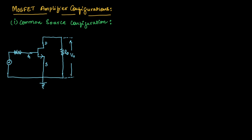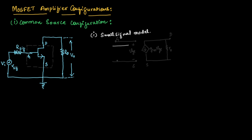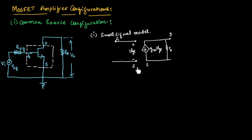We will be measuring the output voltage V0 at the drain terminal, and at the gate terminal we will measure the input. So here the resistor is R signal, and the input is V signal. This is the common source configuration. For each and every configuration, the first step is to find the small signal model. Let us draw the small signal model. Here we know the small signal model for MOSFET, which is shown in this dotted line.